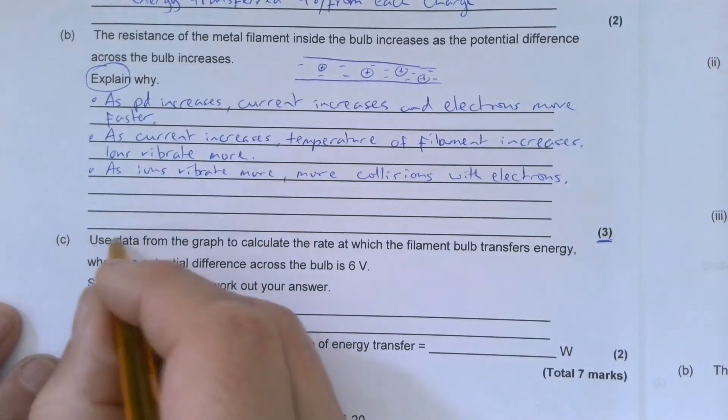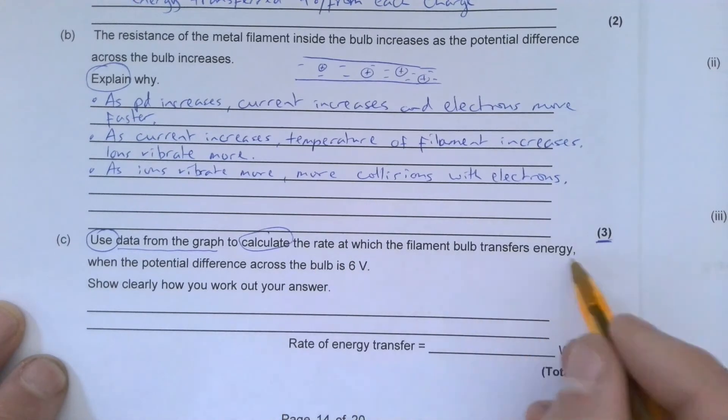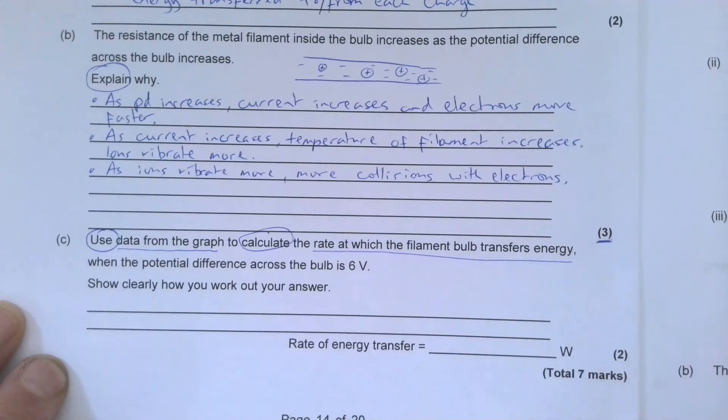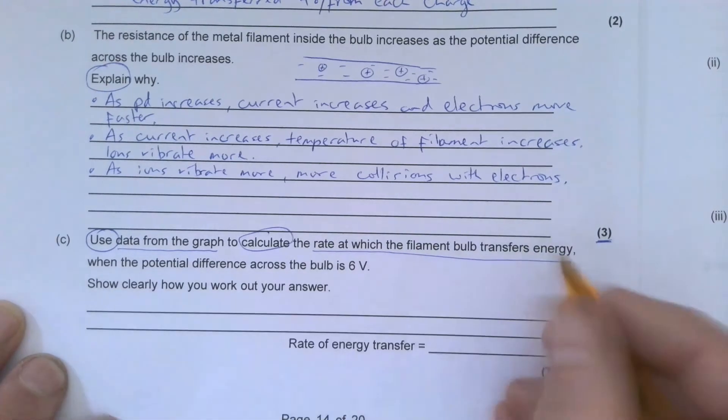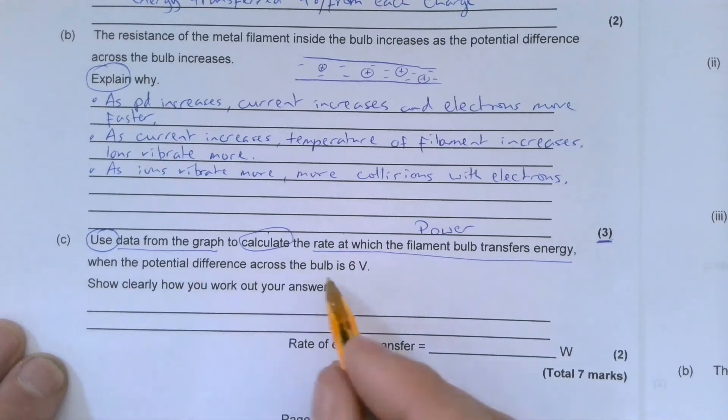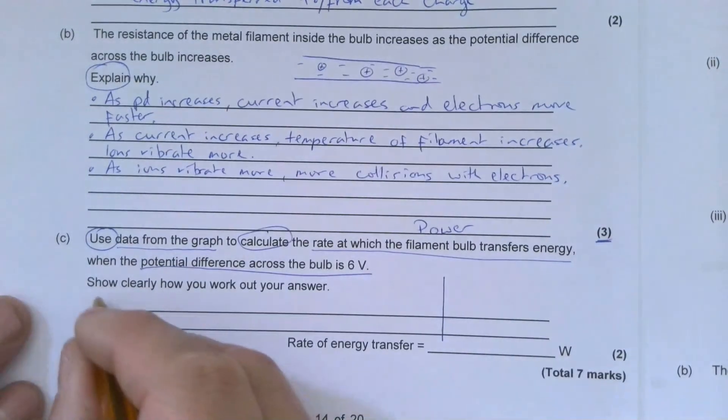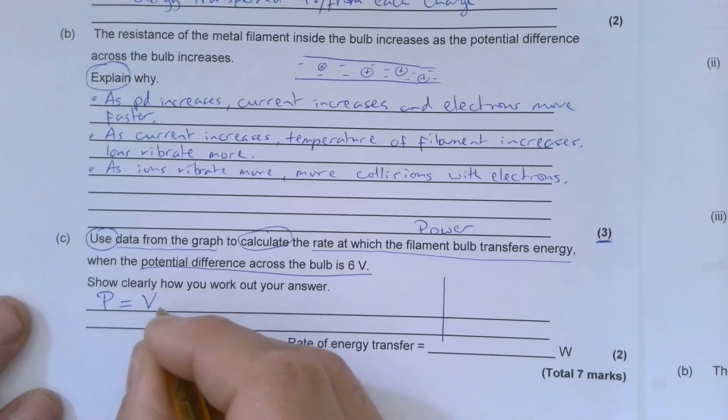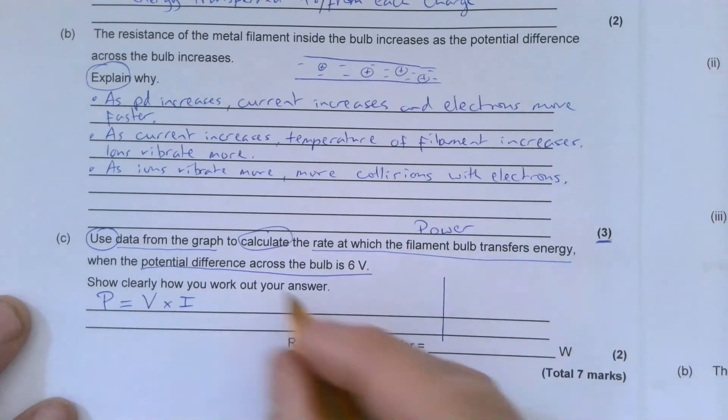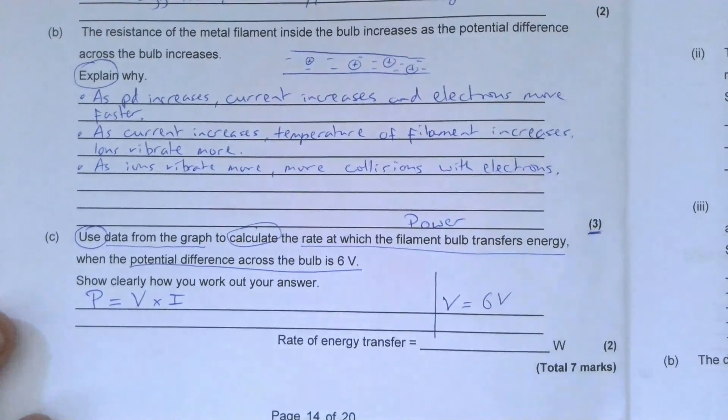Use data - that's a command word - to calculate the rate at which the filament bulb transfers energy. That's a fancy way of saying the power. The rate of transfer of energy is power when the potential difference across the bulb is 6 volts. I need to remember that power is potential difference times current. I know the potential difference is 6 volts. I have to use data from the graph to find the current.